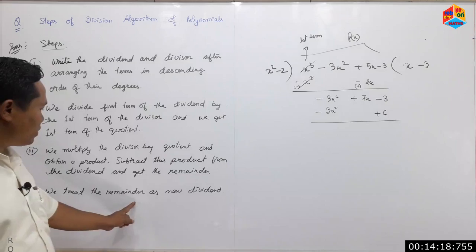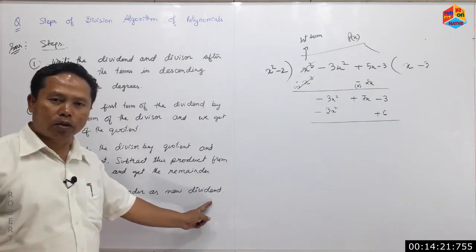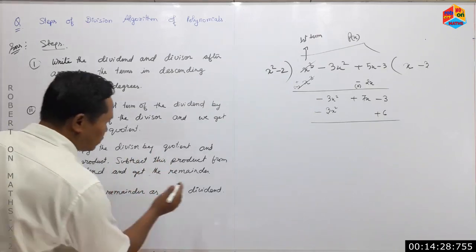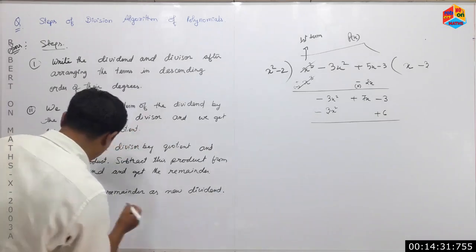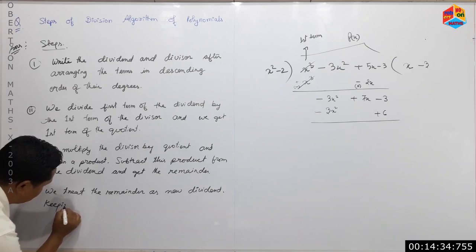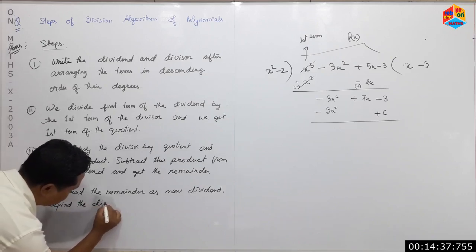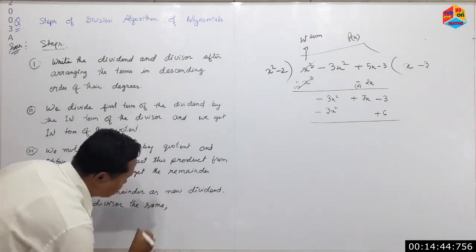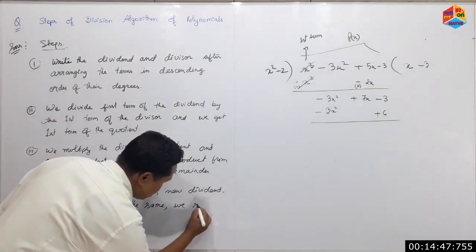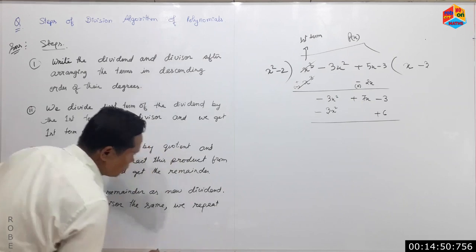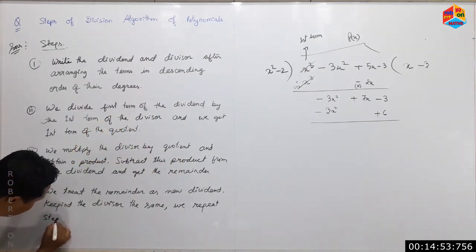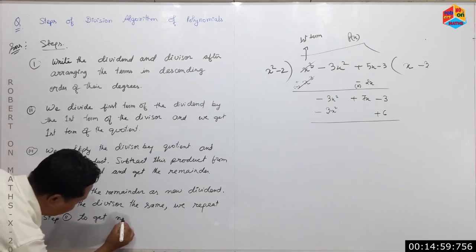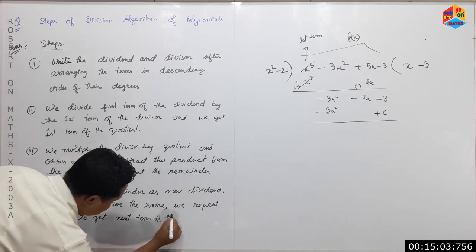We treat the remainder as a new dividend, keeping the divisor the same. We repeat step 2 to get the next term of the quotient.